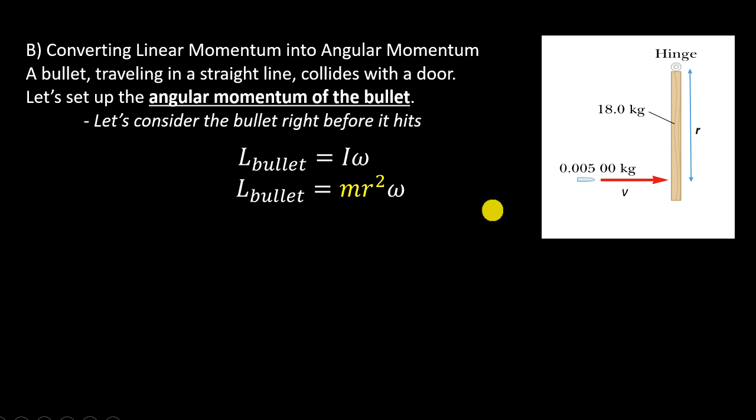So, right before impact, it has a rotational inertia of m times r squared, and an angular velocity. Well, we already saw the cheat for angular velocity. Angular velocity is equal to v over r. So, I have the angular momentum of the bullet is m times r squared times v divided by r. I have r squared, divide by r,